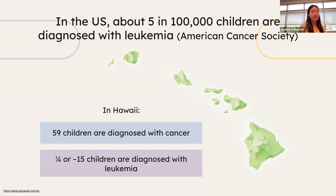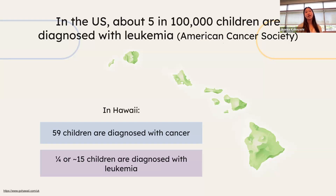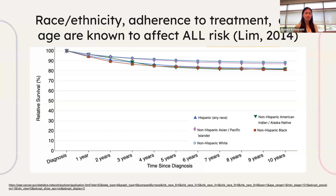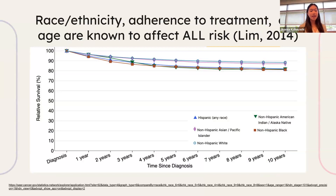Over the past couple of decades, researchers have developed effective treatment regimens, and the overall cure rate for the disease has exceeded 90%. However, this success is unfortunately not observed in all cases. A multitude of factors can affect one's cancer risk, and this is known as a health disparity.